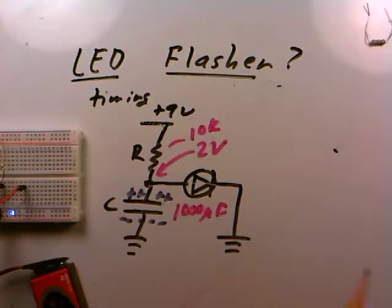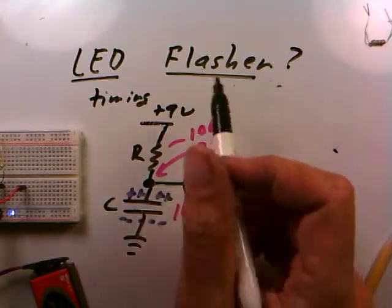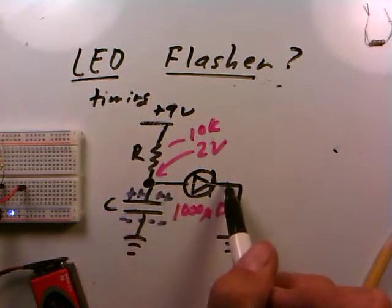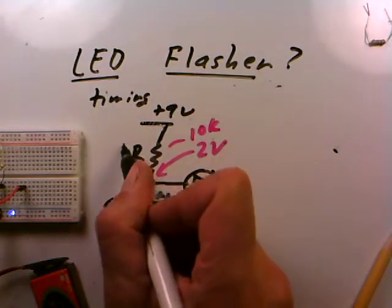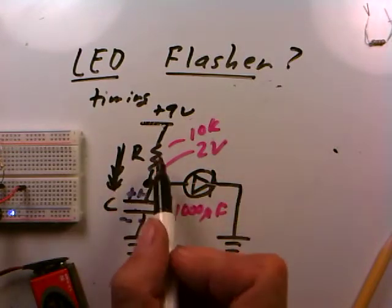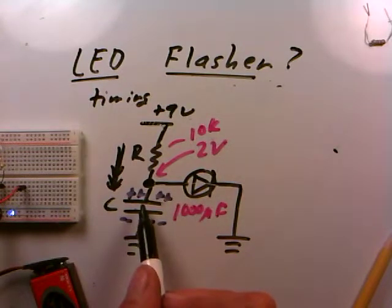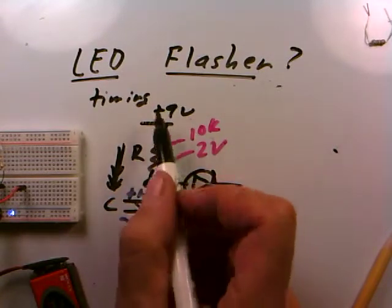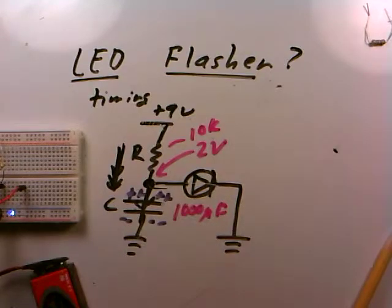Why isn't it flashing? When the capacitor is empty it sucks up so much charge that most current flows into the capacitor rather than the LED during the charging cycle. But as the capacitor becomes full and requires less current, the current from the battery flows into the LED instead and it comes on. So the capacitor becomes full, the LED comes on — end of story. It didn't flash.